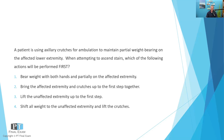A patient is using axillary crutches for ambulation to maintain partial weight bearing on the affected lower extremity. When attempting to ascend stairs, which of the following actions will be performed first? One: bear weight with both hands and partially on the affected extremity. Two: bring the affected extremity and crutches up to the first step together. Three: lift the unaffected extremity up to the first step. Four: shift all weight to the unaffected extremity and lift the crutches.